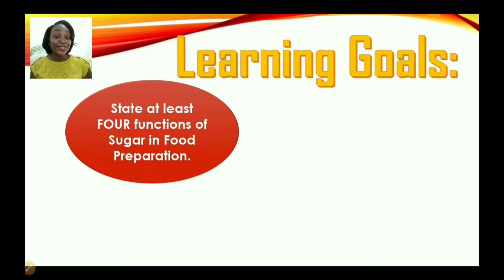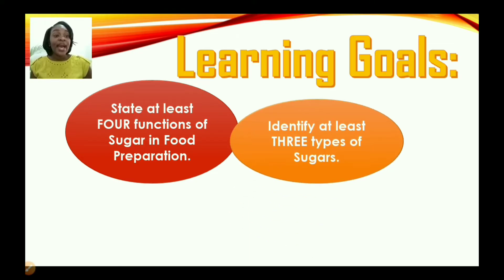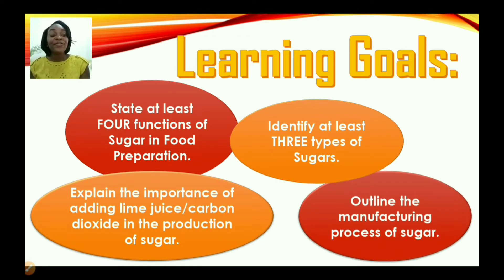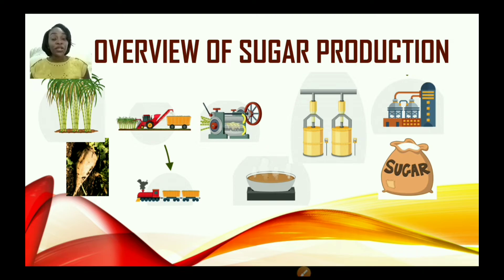Learning Objectives. By the end of today's episode, you should be able to: state at least four functions of sugar in food preparation; identify at least three types of sugars; explain the importance of adding lime juice or carbon dioxide in the production of sugar; and outline the manufacturing process of sugar.